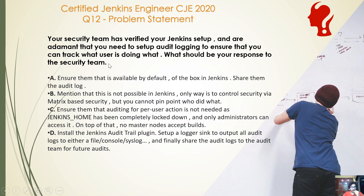What should be the response to the security team? Option A: ensure that this is available by default out of the box in Jenkins and share them the audit log. Option B: mention this is not possible in Jenkins — the only way to control security in Jenkins is via matrix-based security, but you cannot pinpoint who did what. Option C: ensure them that the auditing of per-user action is not needed as Jenkins has been completely locked down, only administrators can access it, and no master nodes accept builds. Option D: install the Jenkins Audit Trail plugin, set up a logger configured to output all audit logs to either a file, console, or syslog, and finally share the audit logs to the audit team for future audits.